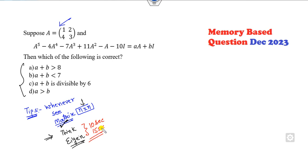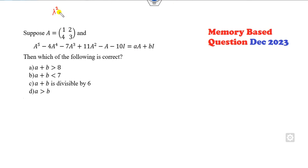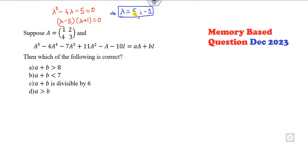Let's see my approach. First, find the eigenvalues. The characteristic equation is λ² − 4λ − 5 = 0, which factors as (λ − 5)(λ + 1) = 0, giving eigenvalues 5 and −1. There is also a shortcut: each column sum equals 5, so one eigenvalue is 5. Since the trace is 4, the other eigenvalue is 4 − 5 = −1.